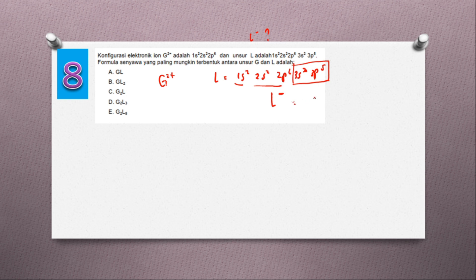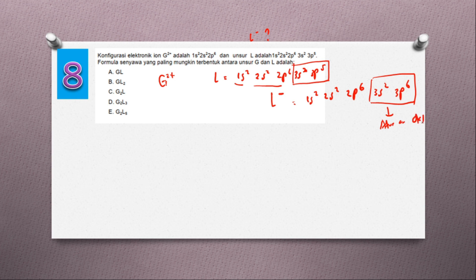Supaya nanti di sini jadi 1s2, 2s2, 2p6, 3s2, dan 3p6 — ada 8 elektron, memenuhi aturan oktet. Jadi L bermuatan minus 1.